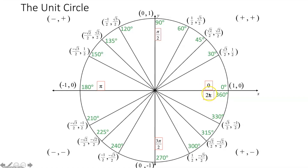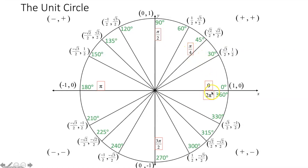Continuing with this theme of breaking up what we know: if a 90-degree rotation is the same as π over 2 radians, then what would be half of that? What would be a 45-degree rotation? Well, that would be half of π over 2, which is π over 4. So if a 45-degree rotation is π over 4 radians, all we have to do is count by π over 4s to get all of the 45-degree multiples.